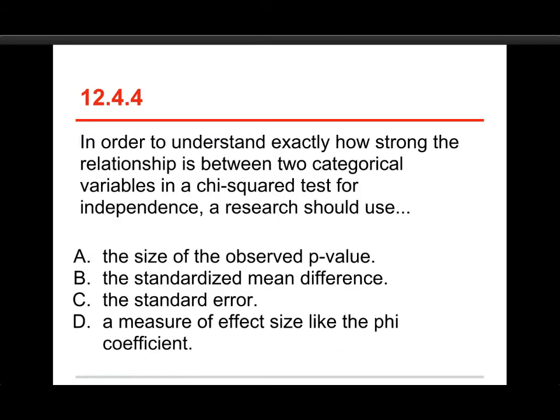The fourth one, in order to understand exactly how strong the relationship is between two categorical variables in a chi-squared test for independence, a researcher should use A, the size of the observed p-value, B, the standardized mean difference, C, the standard error, or D, a measure of effect size like the phi coefficient.